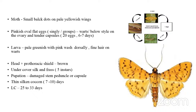The moth lays pinkish oval flat eggs singly or in groups of two or three, mostly in between the whorls or just below the style on the ovary, and also on tender developing capsules. On a single panicle, a maximum of 20 eggs may be noticed. The incubation period is six to seven days.